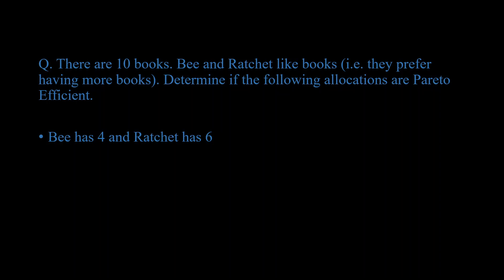How do we check if something is Pareto efficient? Let's try to make B better off in this case. For B to get better off, B will have to take books from Ratchet. Taking books from Ratchet will make B better off, but then Ratchet will lose his books, which will make Ratchet worse off because he has fewer books. What if we take books from B and give them to Ratchet? Then Ratchet will be better off, but again B will be worse off. So there is no way to make someone better off without making someone else worse off.